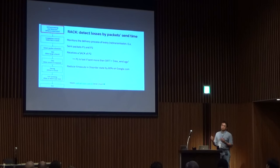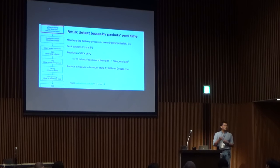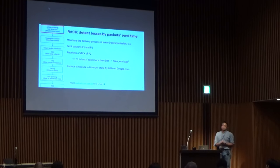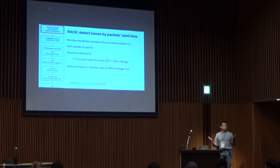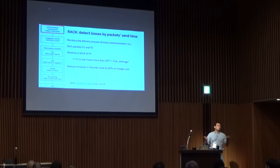We have deployed a new thing called RACK. Instead of counting the number of out-of-order packets, we monitor when each packet was sent — essentially putting a timer on every packet. When it expires, you retransmit. For example, if you send P1 and P2 and get an acknowledgement of P2, you know P1 should have been delivered since at least one RTT has passed. You wait a reordering window of about a quarter RTT, and if you still don't hear about that first packet, you retransmit.